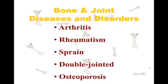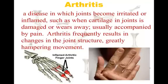Now let's look at some diseases and disorders of bones and joints — arthritis, rheumatism, sprains, double-jointedness, and osteoporosis. Arthritis is a disease in which joints become irritated or inflamed — they get an infection, as when the cartilage in your joints is damaged and wears away. It's usually accompanied by pain and can actually change the structure of that joint, being very handicapping with lots of pain.